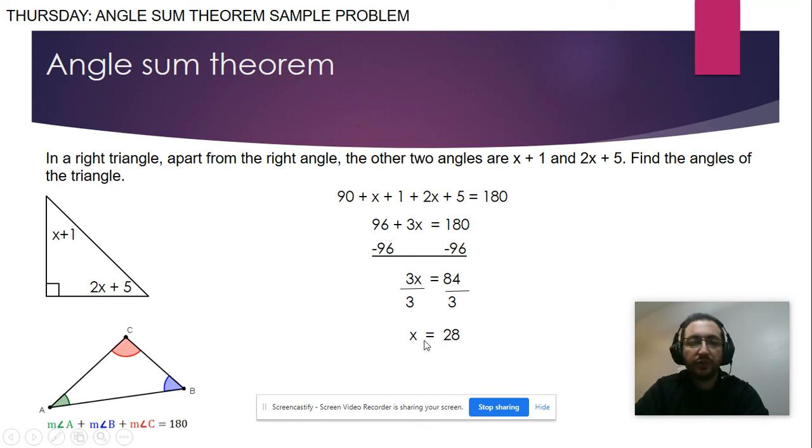But the question is find the angles, not find the x. So we're going to use x to find the angles. The first angle will be x plus 1, so using x I'm going to find this angle, which is 28 plus 1, so my first angle will be 29.